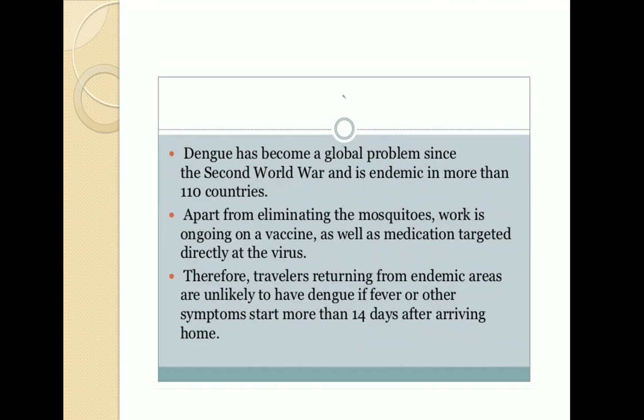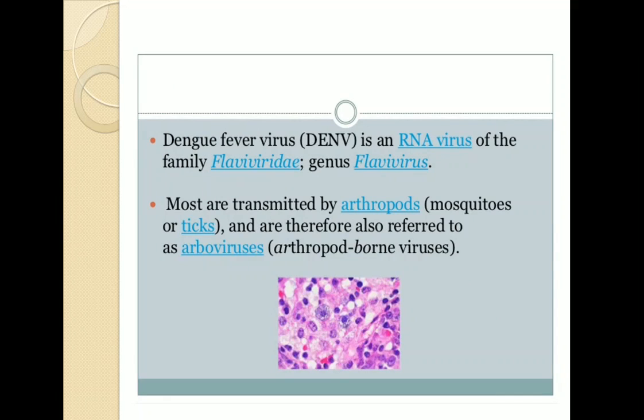Dengue has become a global problem since World War II and is endemic. Therefore, travelers returning from endemic areas are unlikely to have dengue if fever or other symptoms start more than 14 days after arriving home. Dengue fever is an RNA virus of family Flaviviridae, genus Flavivirus. Most are transmitted by arthropods such as mosquitoes or ticks and are therefore referred to as arboviruses — meaning arthropod-borne viruses.